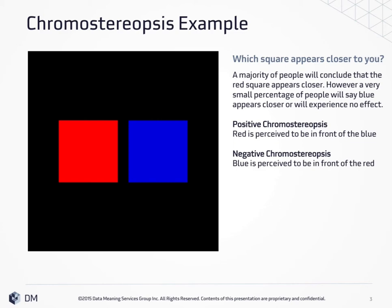However, a small percentage of people will say that blue appears closer, and this is known as negative Chromostereopsis. And some people will say they experience no effect at all.